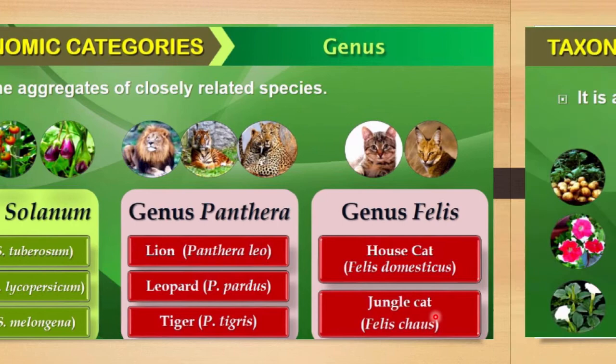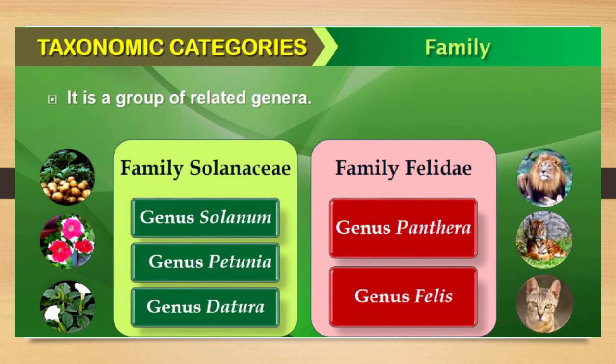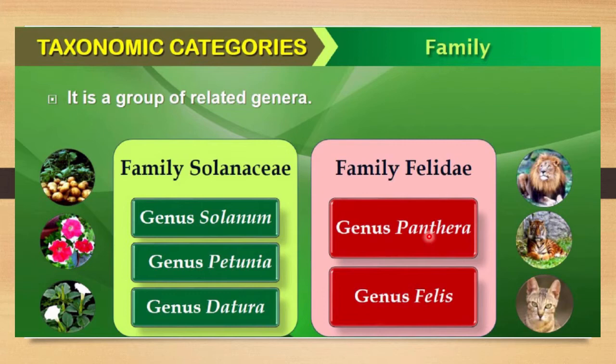The next taxonomic category is family, which is a group of related genera. For example, the plant family Solanaceae includes the genera Solanum, Petunia, and Datura. For animals, the family Felidae includes both genus Panthera and genus Felis. So many genera together form a family.